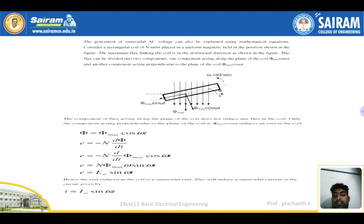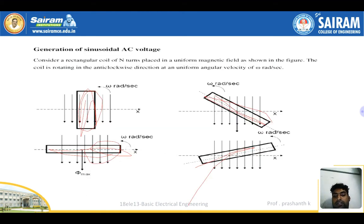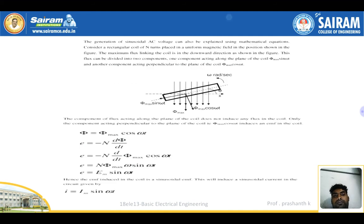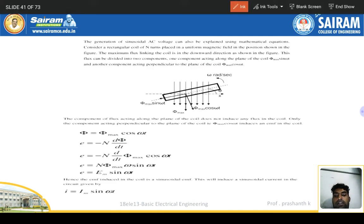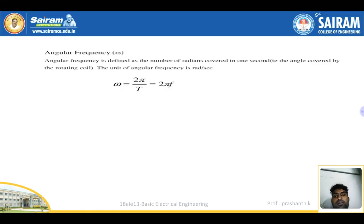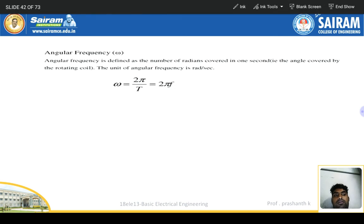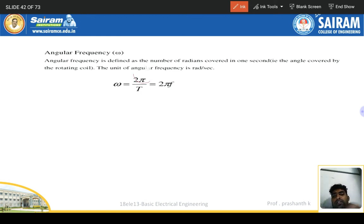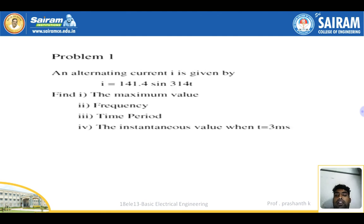The flux is Φ = Φ_max cos(ωt). According to Faraday's law, E = −N dΦ/dt, which gives E = N Φ_max ω sin(ωt), so E = E_m sin(ωt) and I = I_m sin(ωt). Angular frequency ω is defined as the radians covered per second. Since circular displacement is 2π and frequency f = 1/T, we get ω = 2πf.